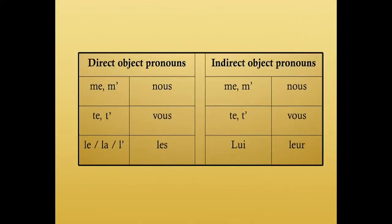Let me begin by displaying a table containing the direct object pronouns COD and the indirect object pronouns COI. As you can see from these two tables, the first and second person singular and plural — that is me, te, nous and vous — are the same. It's only the third person which is different. So all you need to remember is that le, la, l' are direct object pronouns, while lui and leur are indirect object pronouns.